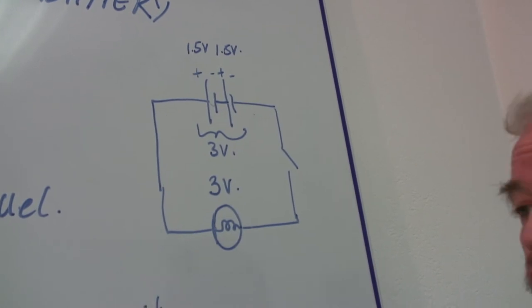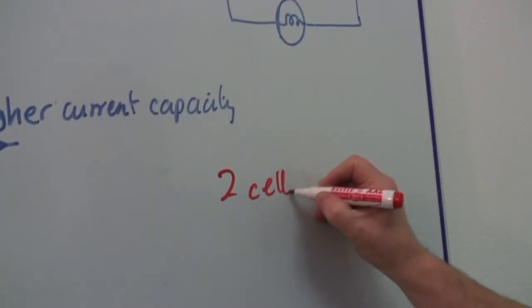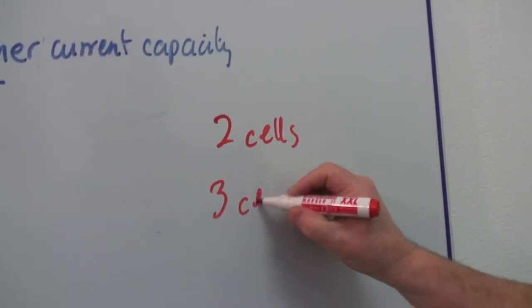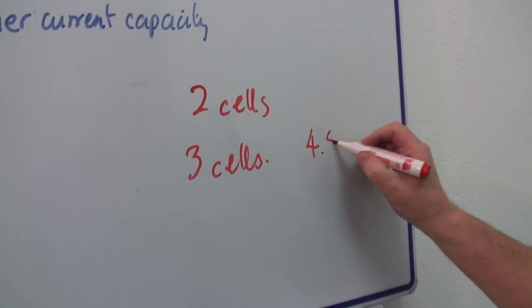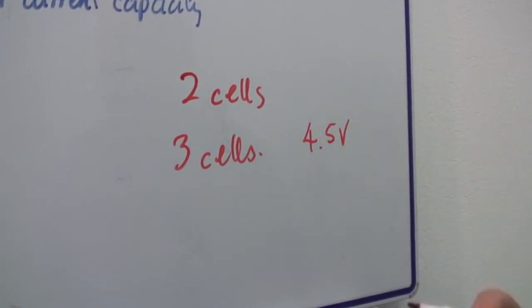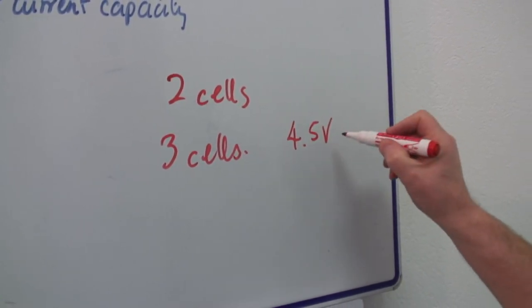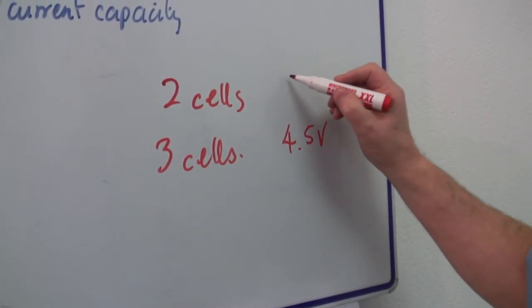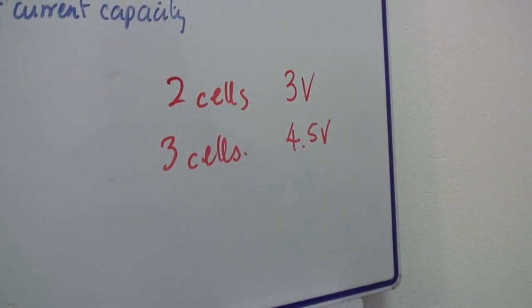In your common torch, you usually have 2 cells or 3 cells. If you've got 3 cells, that's going to be 4.5 volts. And when you look at your bulb rating in your torch, you should find it's 4.5 volts. Two cells, it will be a 3 volt rating on the bulb.